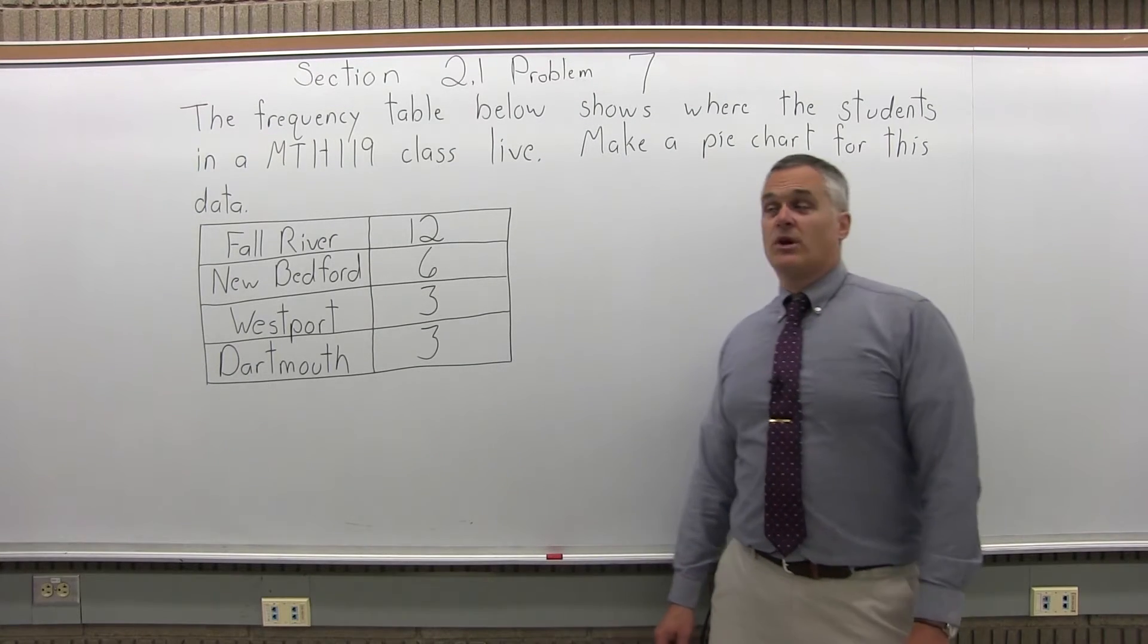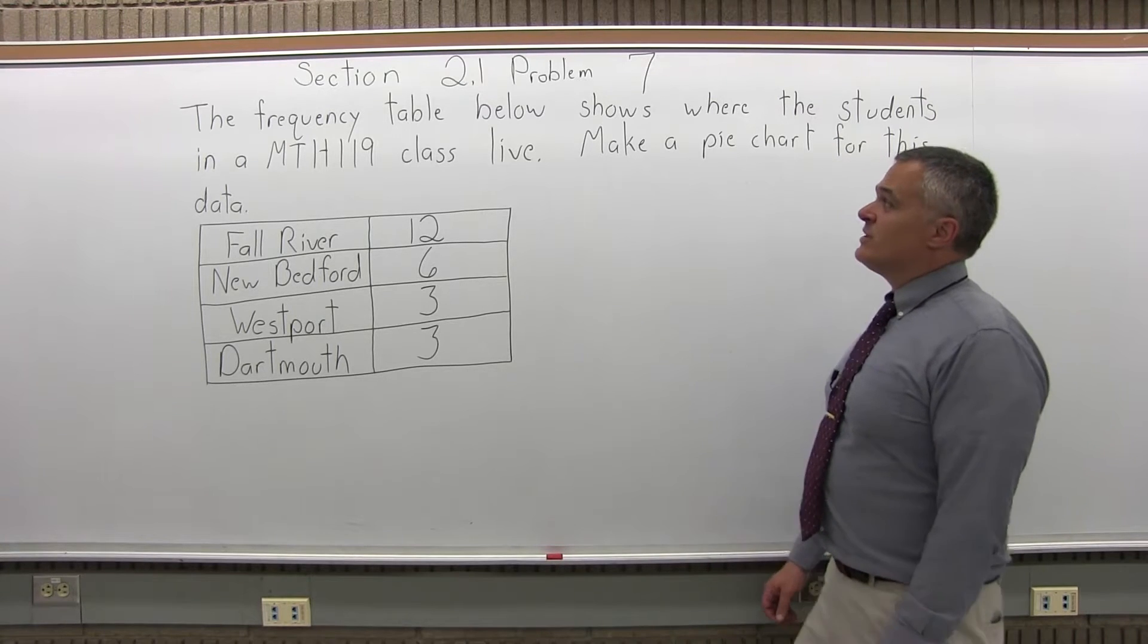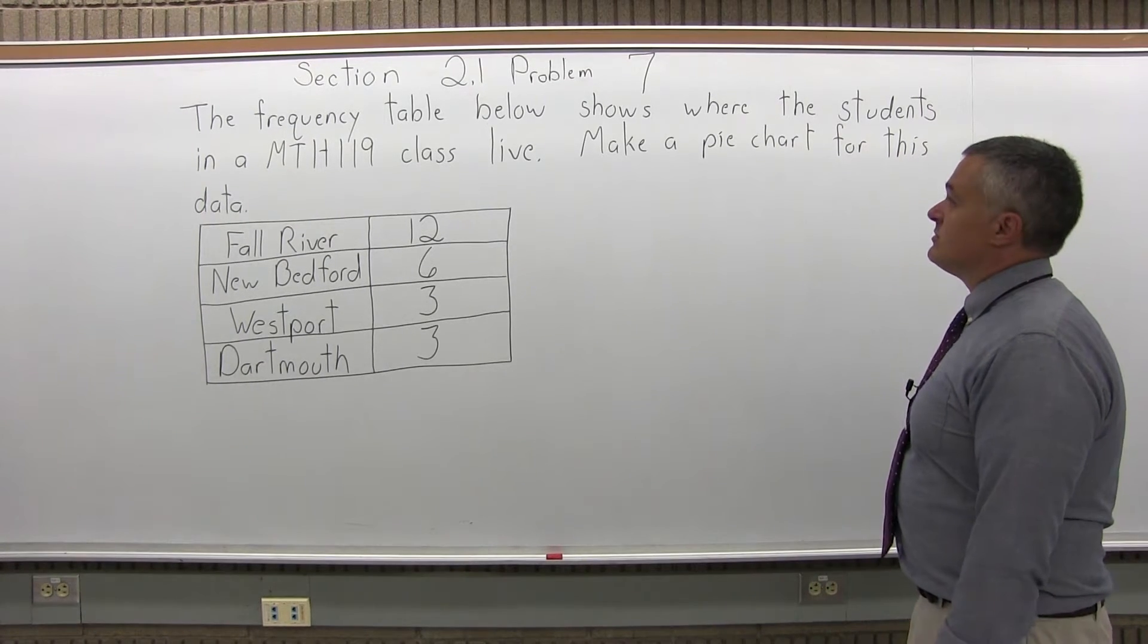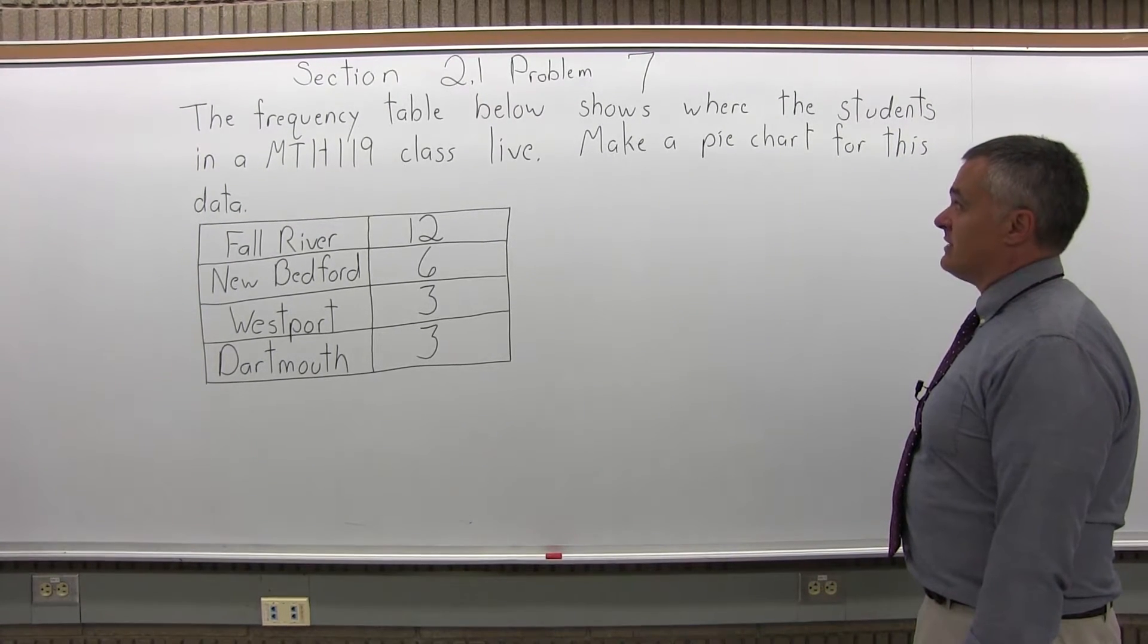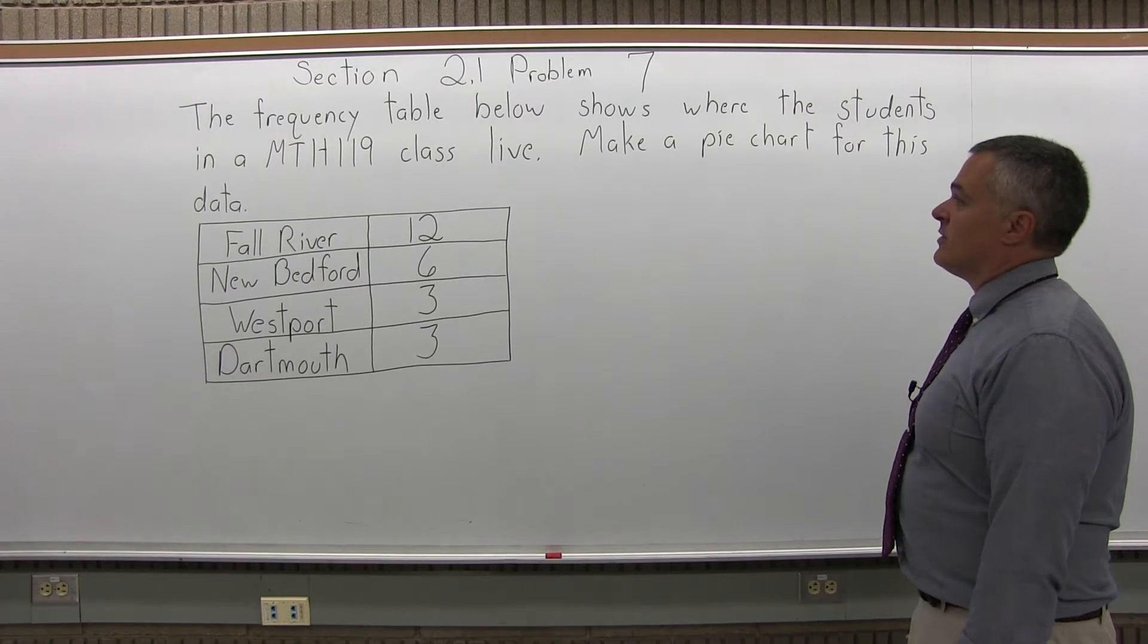This is Section 2.1, Problem 7. It says, the frequency table below shows where the students in a Math 119 class live. Make a pie chart for this data.